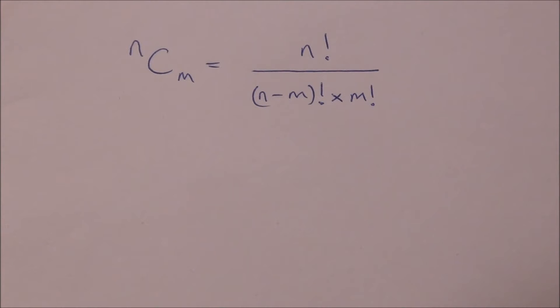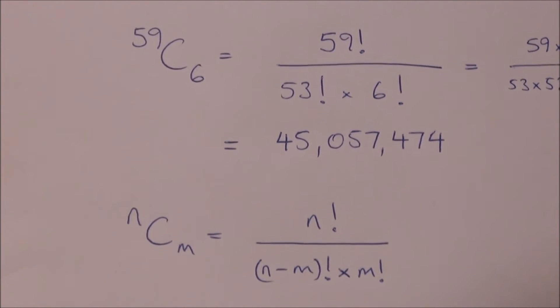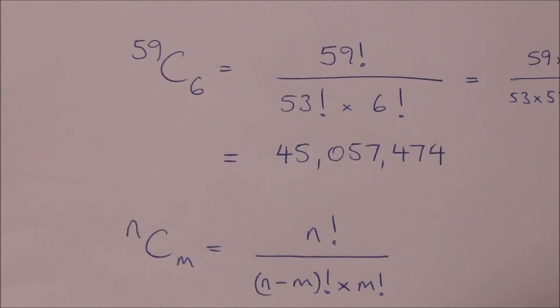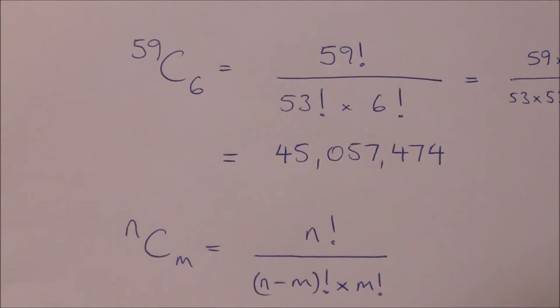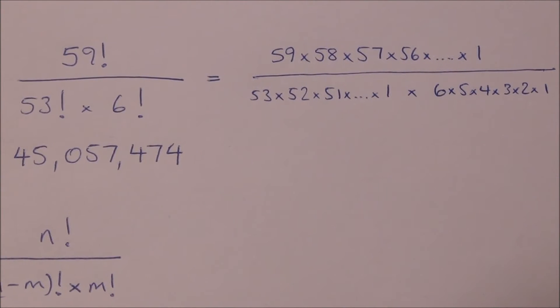So, for instance, the total number of possible combinations for the lottery, where order doesn't matter, is 59 choose 6. So, there are 59 total balls, you pick 6 of them, and order doesn't matter, so the total combination is 45,057,474. And, as you can see, you can actually put this through your calculator if you wish, but it's simply this sum there.